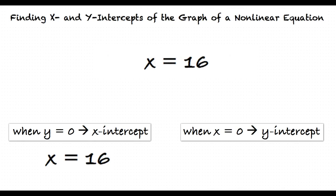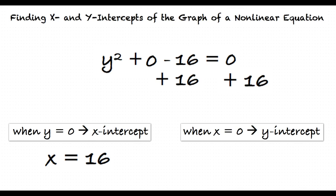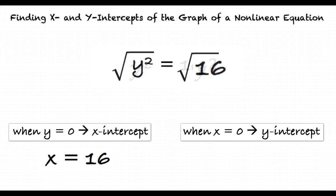To find the y-intercept, we should substitute 0 for x, right? Yeah. The equation now reads y² + 0 - 16 = 0. Add 16 to both sides to set y² = 16. Then take the square root of both sides of the equation.